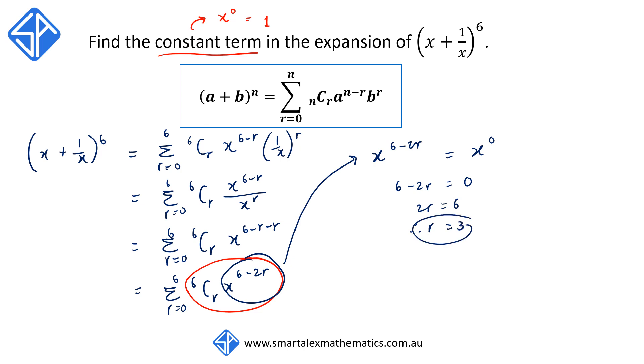Once we know r is equal to 3, we're going to sub back into the general term. So we're going to get 6C3 x to the power of 6 minus 2 times 3, which is equal to 6C3 x to the 0. x to the 0 is 1, so we get 6C3, which is equal to 20.